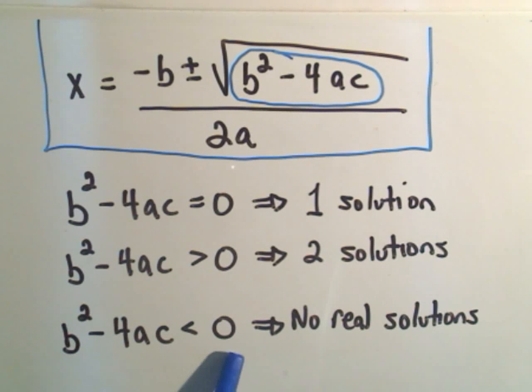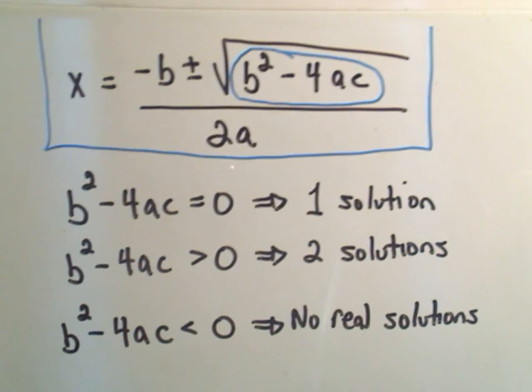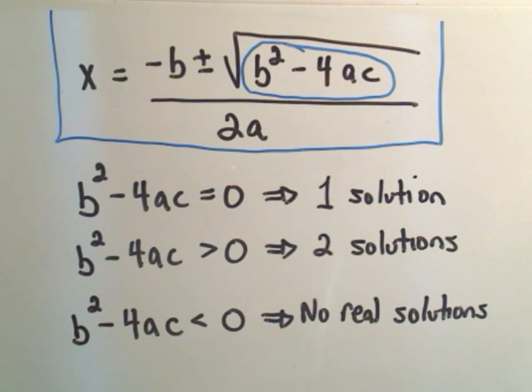It says if the stuff underneath the square root is less than zero, well, that means it's negative. And we don't take square roots of negative numbers, unless we use complex numbers, and we're not going to do that.